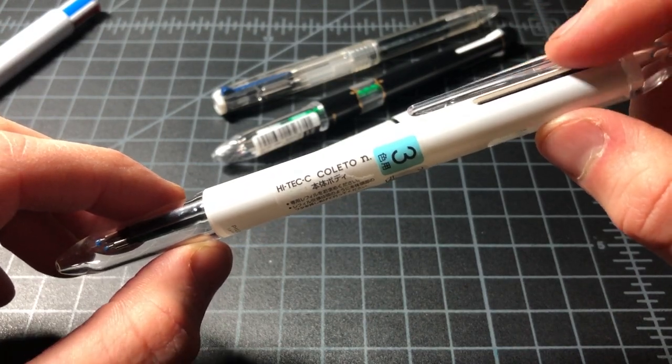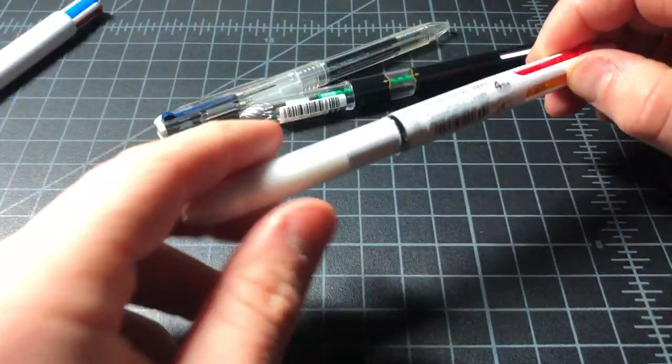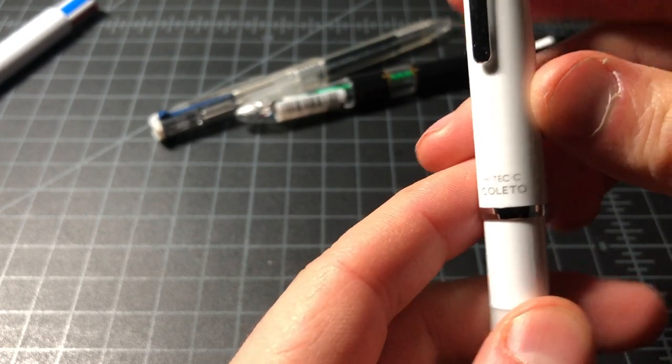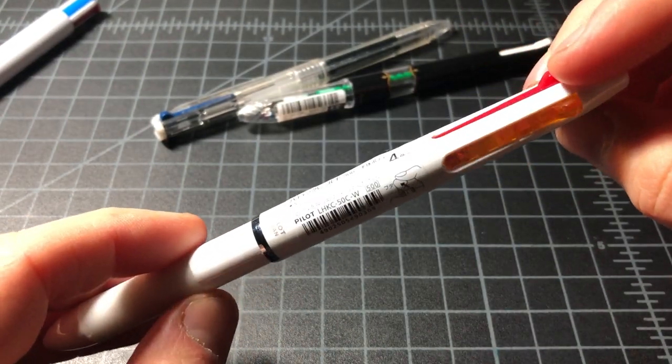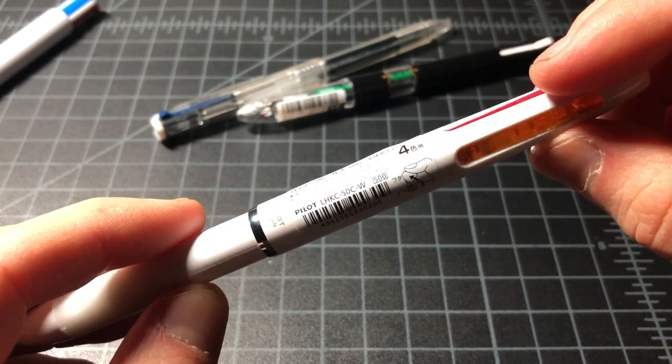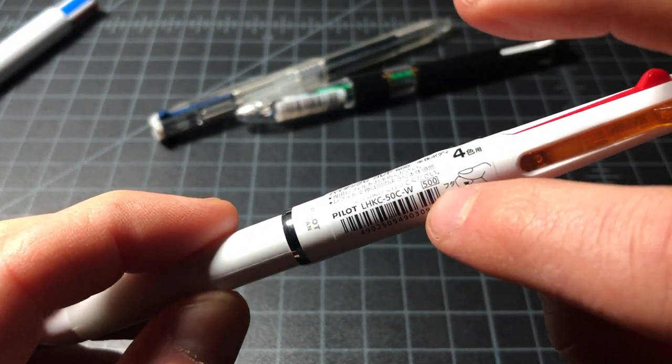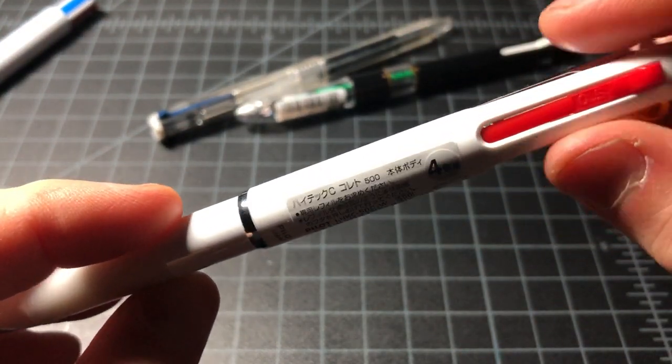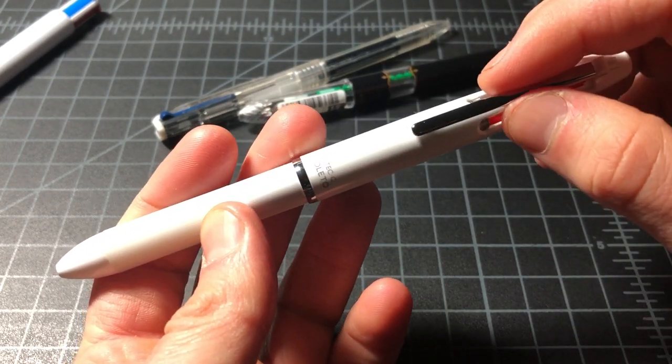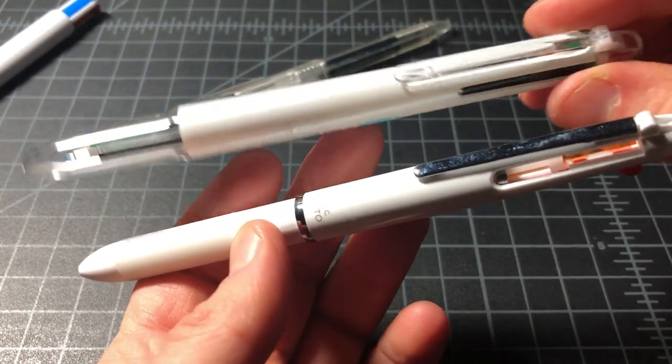So this is my favorite in a three size, it's called the Hi-Tec-C Coleto N3. Let's talk about this one. This is another one, this is the Hi-Tec-C Coleto, but this is called the 500. This is a four pen, four size pen, and the 500 is just the body style. I think that's the model number there, and the 500 is what it's generally called.